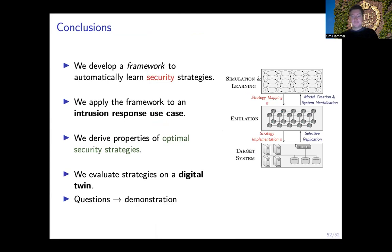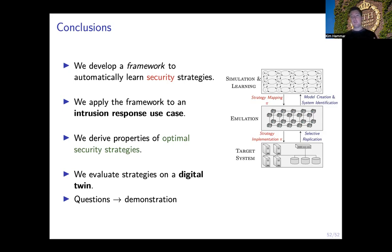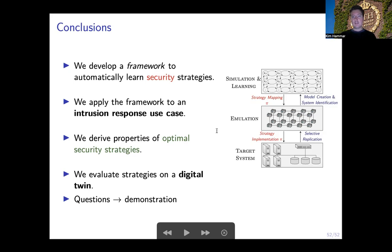To conclude: in our work we develop a framework for automated intrusion response. This framework centers around a digital twin of the target infrastructure, which we use to collect data, evaluate strategies, and obtain the strategies we want to evaluate. We formulate the use case as a stochastic game between the defender and the attacker, and approximate an equilibrium of this game using fictitious play. Thank you very much for listening, and to end this talk I will do a short demo of our framework as promised.